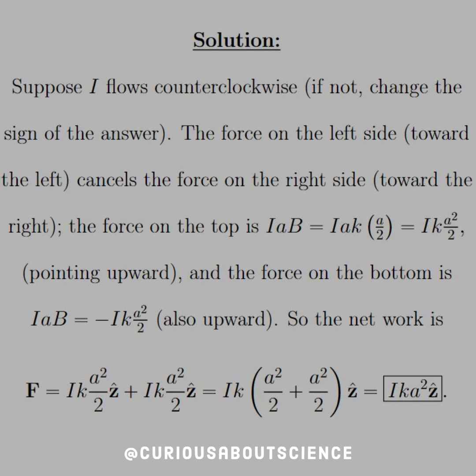So we have Iak times a over 2; simplify that through, we have Ika squared over 2 pointing upward. And the force on the bottom is similar but in the opposite direction. Since we're pointing down, two negatives make a positive; that's why we're pointing upward.